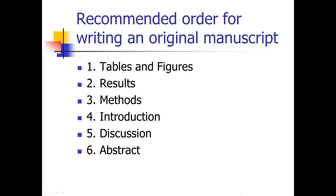If you do the tables and figures first, then the next thing that follows is writing your results section, because the tables and figures lead right into it — the results section is a summary of what's in your tables and figures. Then usually the next thing would be the methods. You can write the methods at any time since you've already done the experiments, but I put that as the third step. I find the methods a little boring to write — not hard, but you're just rehashing what you did.